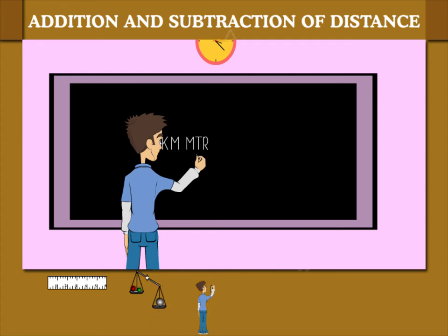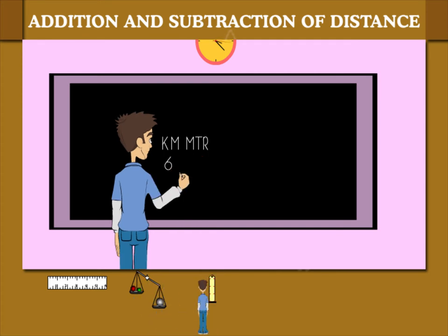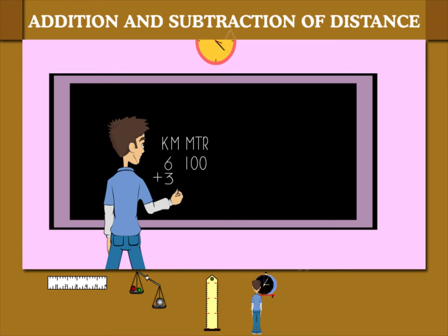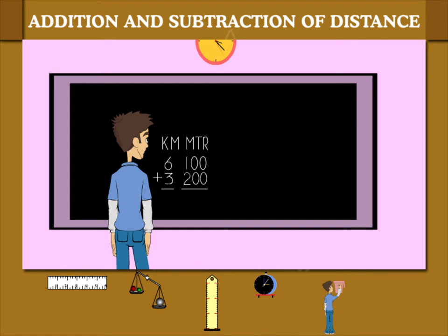He rides 6 kilometers and 100 meters. To this he adds 3 kilometers and 200 meters.